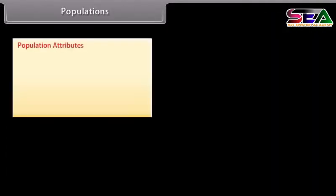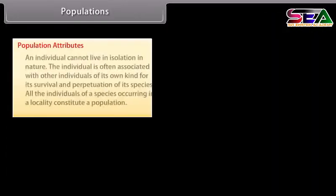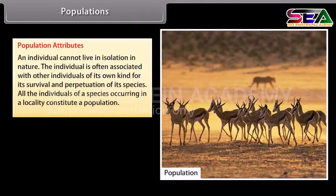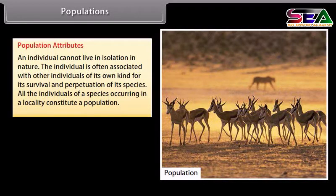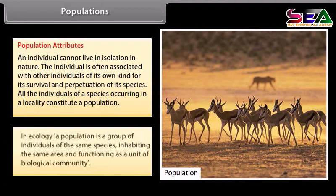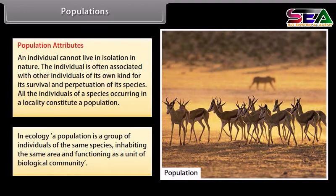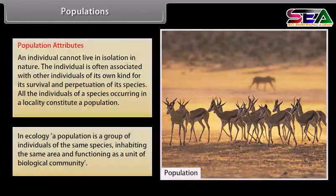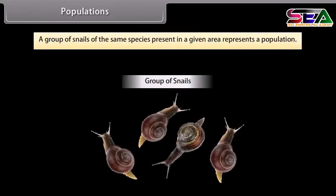An individual cannot live in isolation in nature. The individual is often associated with other individuals of its own kind for survival and perpetuation of its species. All the individuals of a species occurring in a locality constitute a population. In ecology, a population is a group of individuals of the same species inhabiting the same area and functioning as a unit of biological community.